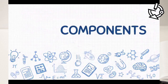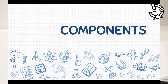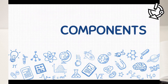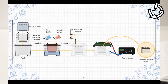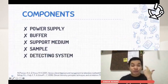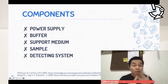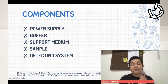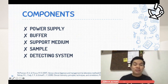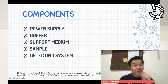Let's move on to the different components of electrophoresis. Generally, an electrophoretic system includes a power supply, a buffer, a support medium, a sample, and a detecting system. The detecting system can vary depending on the need or demand of your test.